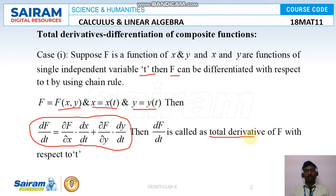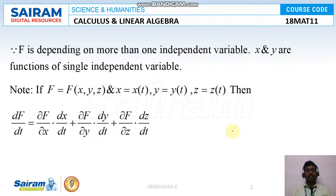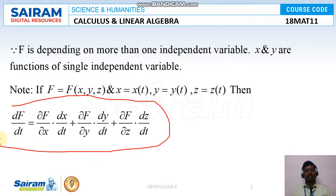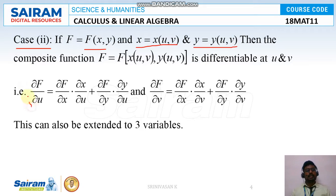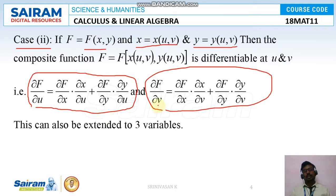df/dt is called the total derivative of f, or chain rule. Some types of functions we can't differentiate directly using partial differentiation, so that type of problem we can simplify by using the total derivative. Case 2: if the function is f = f(x, y), but the variables x = x(u, v) and y = y(u, v), then we find the differentiation ∂f/∂u and ∂f/∂v using the total derivative or chain rule.